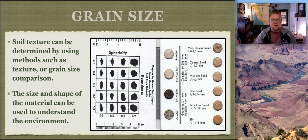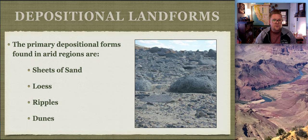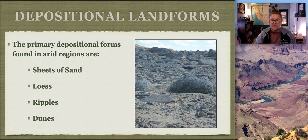Grain size is something we can study because it's a way for us to interpret the landscape. The depositional landforms we'll talk about are sheets of sand, loess, ripples, and sand dunes.